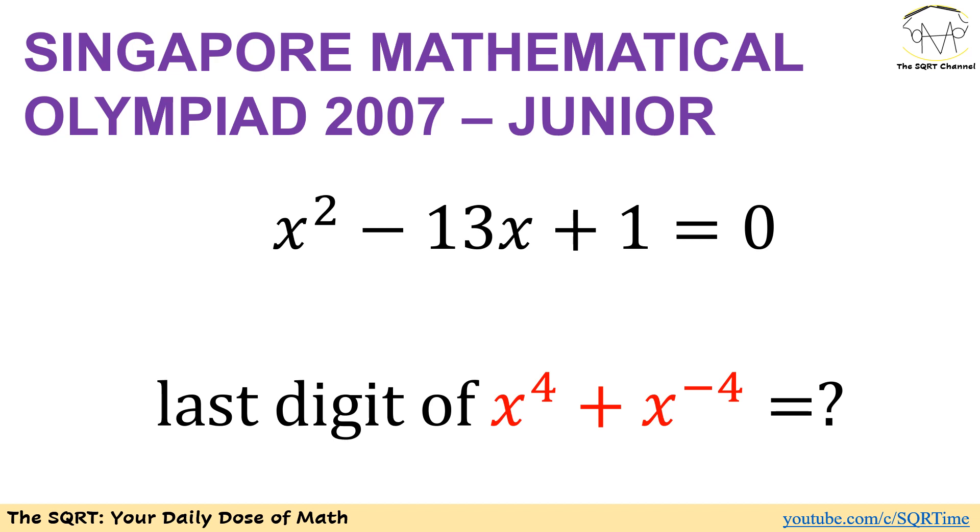Here we have x squared minus 13x plus 1 equal to 0 and we are going to find the last digit of x to the power of 4 plus x to the power of negative 4. Before moving forward to talk about the solution make sure that you pause the video to think about this problem. We will see you in about 15 seconds.